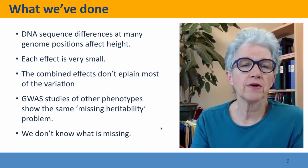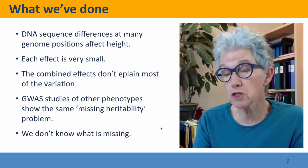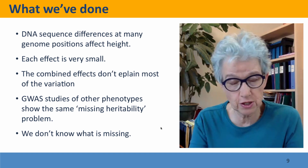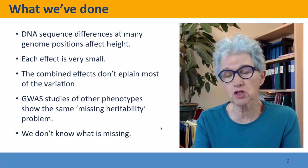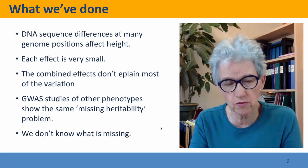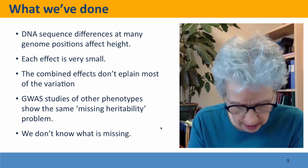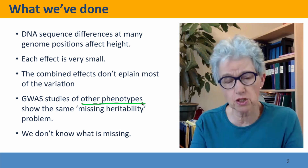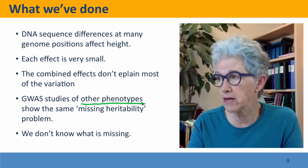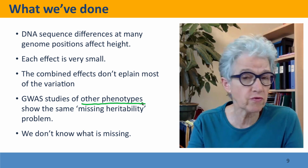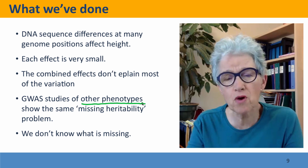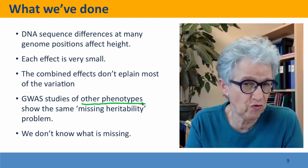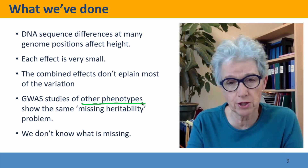We've talked about trying to find the genetic differences responsible for differences in height, and found that the effects of each individual genetic difference are very small, and that the combined effects are still very small — they don't explain most of the variation. This is true not just for height, but for most other phenotypes that have been studied. There are really very few cases where naturally variable phenotypes are known to be controlled by genes that have big effects.